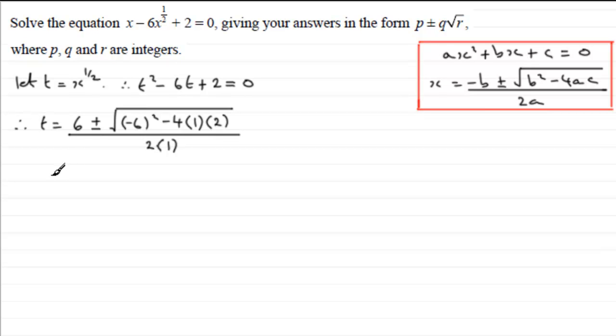Cleaning this up, what have we got? We've got the 6 here plus or minus the square root of 36 minus 8 which is 28, and it's all divided by 2.